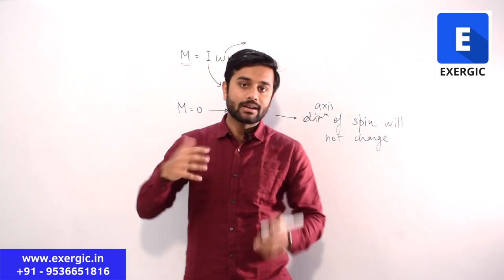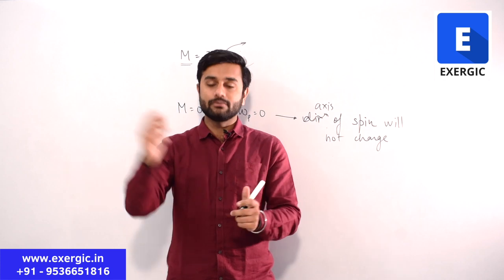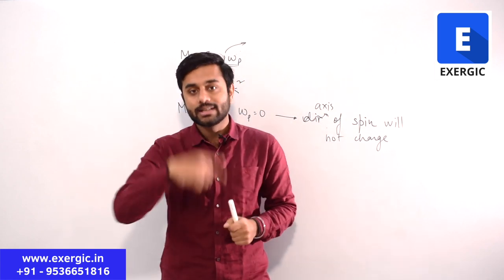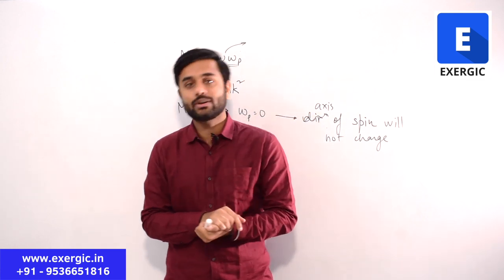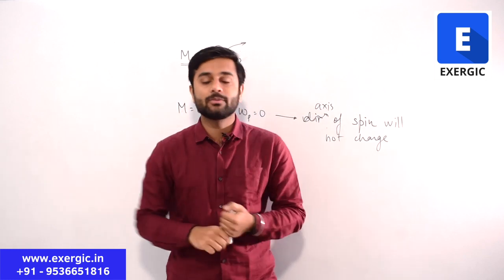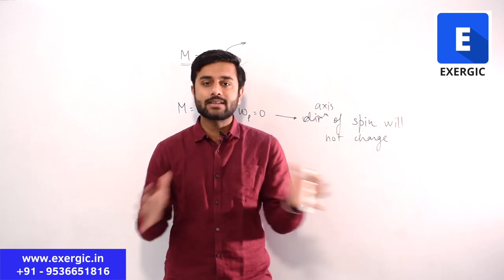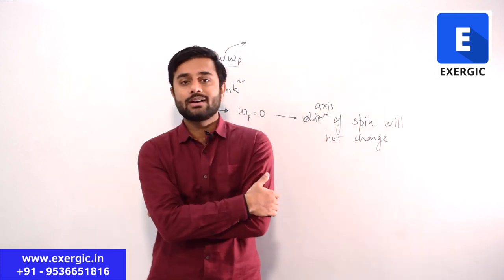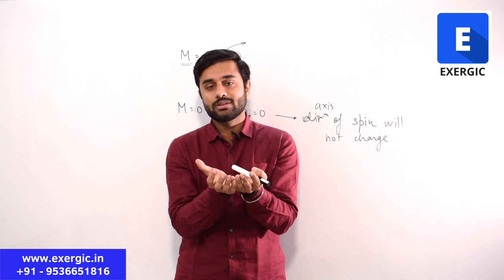If we apply the same principle to a rotating disk, suppose we make a setup where it is not possible to apply any moment or torque on the disk. As a result, it will keep on spinning about the same axis pointing in the same direction. That is what happens in a gyroscope. A gyroscope, as I have already told you, is not taught in most places but is directly mentioned in the GATE syllabus. In simple words, a gyroscope is nothing but a rotating disk present in a setup where it is not possible to apply any moment or torque on it.